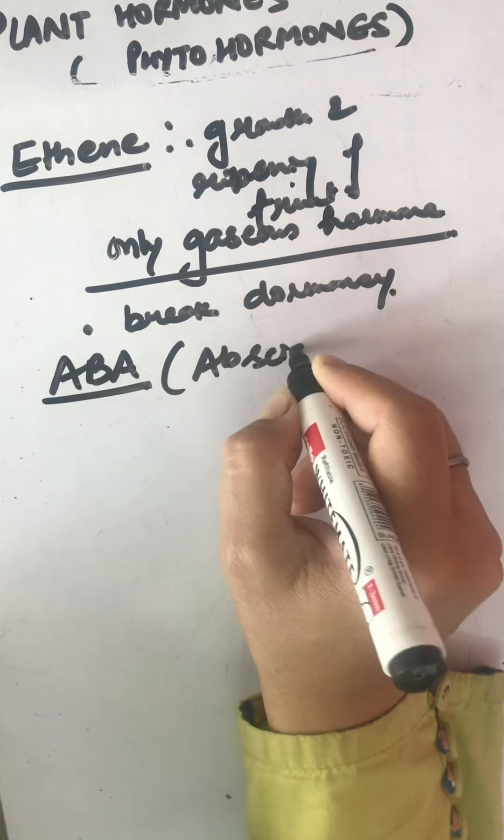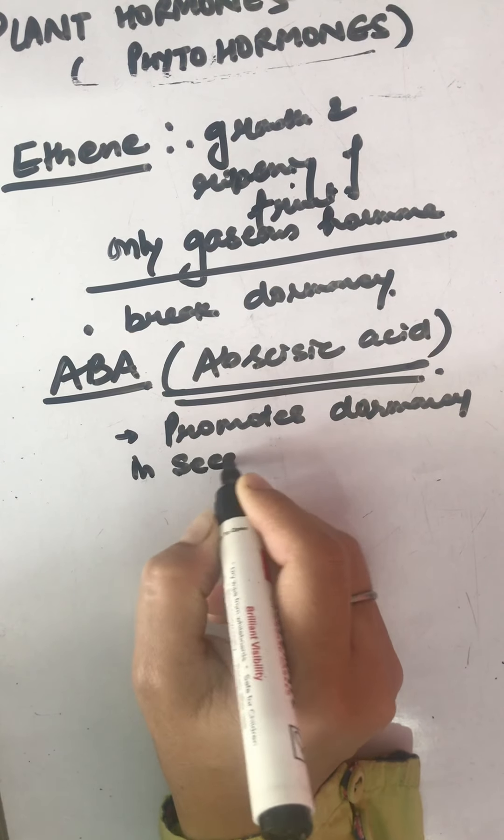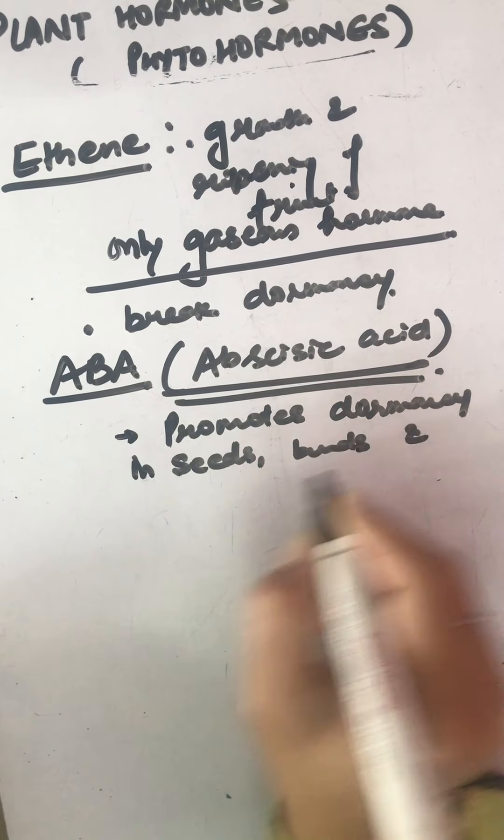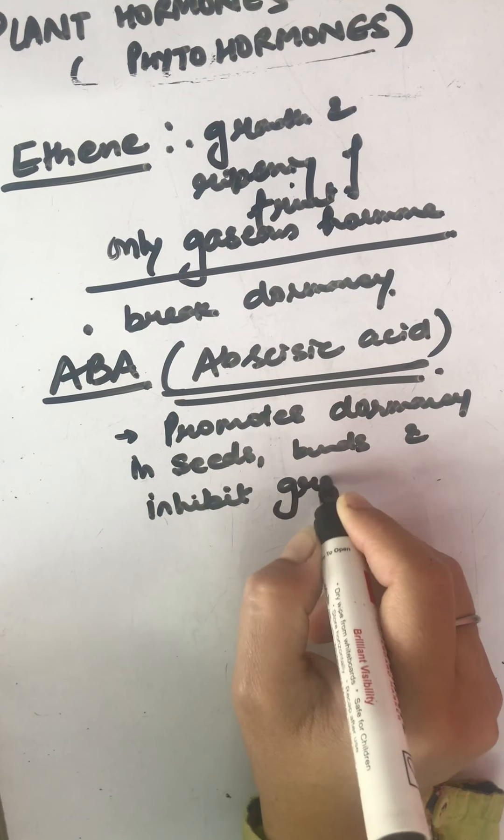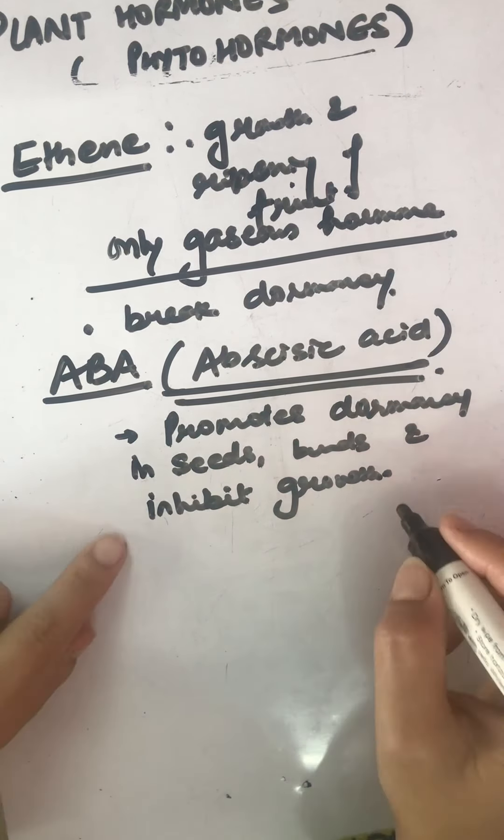Abscisic acid (ABA) is the growth inhibitor, so it does the reverse of promoters. It promotes dormancy in seeds and buds, and inhibits growth. Under unfavorable conditions, it keeps the plant inactive.